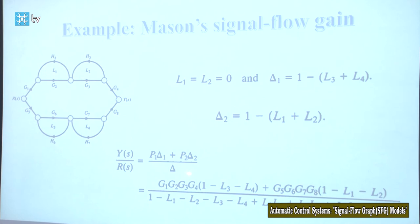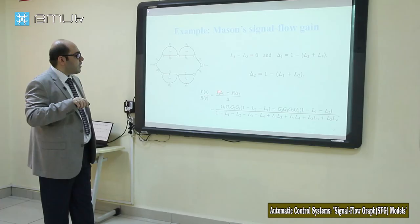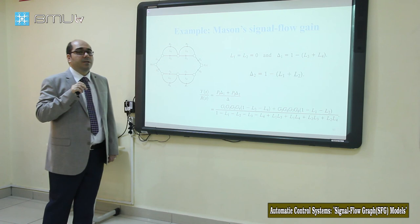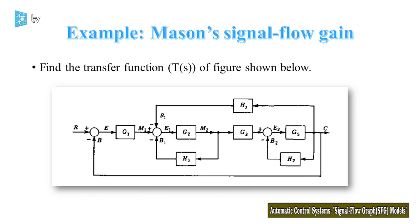Our Mason's formula is: (P1 × delta_1 + P2 × delta_2) / delta. We have found all the values of these terms. By substituting the values of these terms into this formula, you can find the transfer function of the system using Mason's formula and the signal flow graph. As an assignment, you can draw the signal flow graph of this system and calculate its transfer function using Mason's formula.